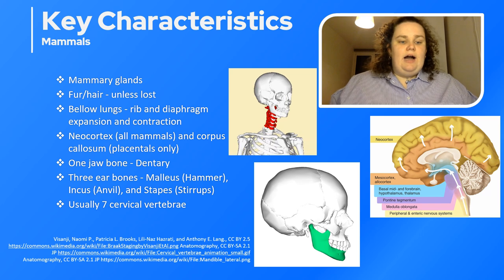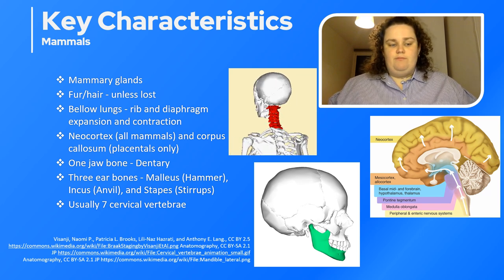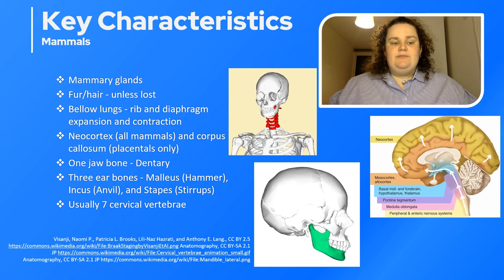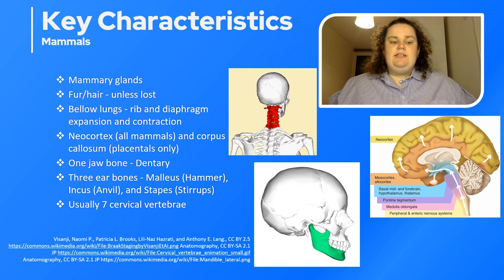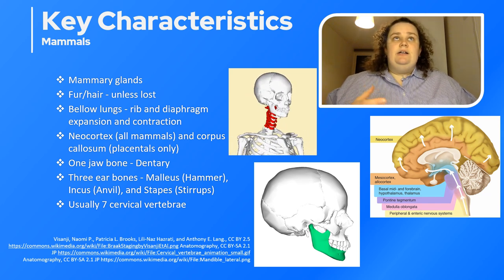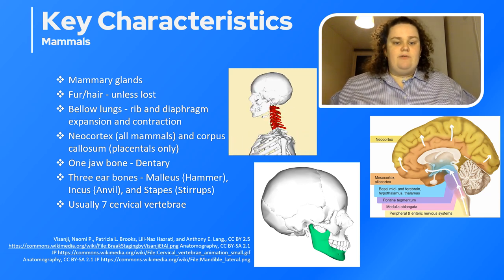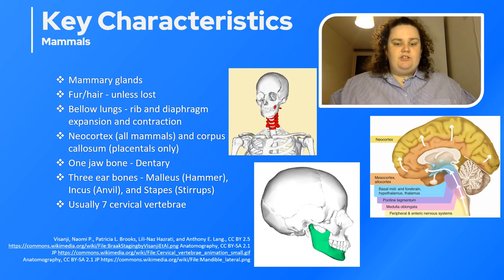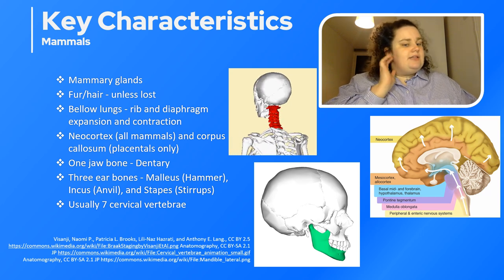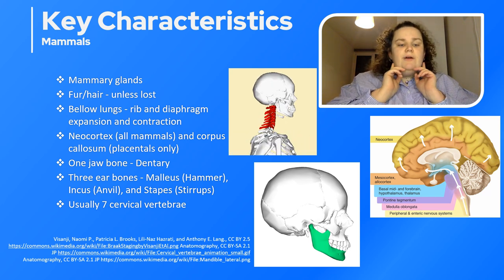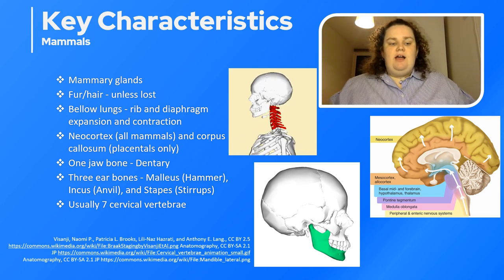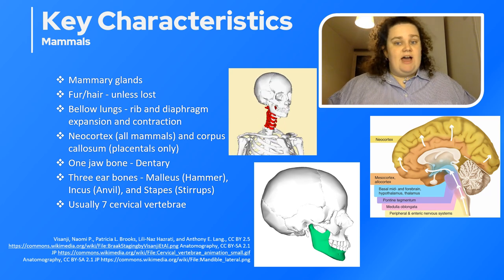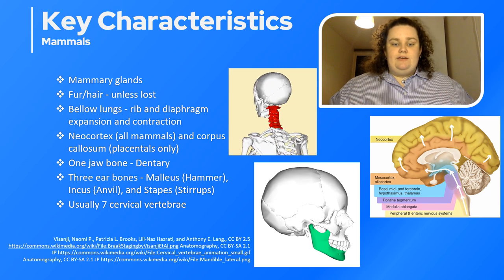We also have three ear bones known as the malleus — the hammer — the incus — the anvil — and the stapes — the stirrups. These ear bones actually originated from the bones that our ancestors had in the lower jaw. We had many small bones making up the dentary area, and during mammalian evolution these three ear bones moved up, leaving one big bone in the jaw. We also usually have seven cervical vertebrae — for example, humans and giraffes both have seven, though in giraffes those bones are elongated.